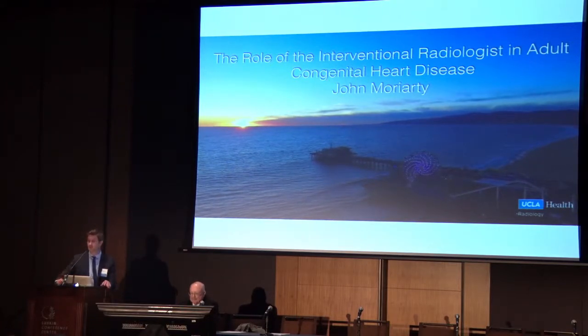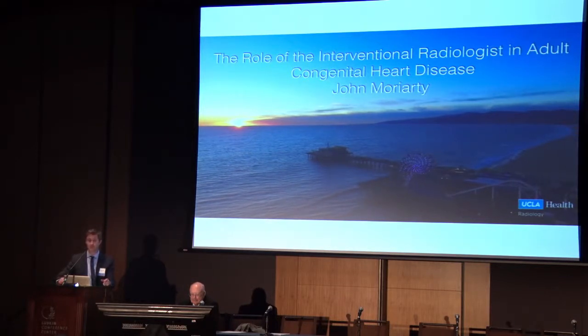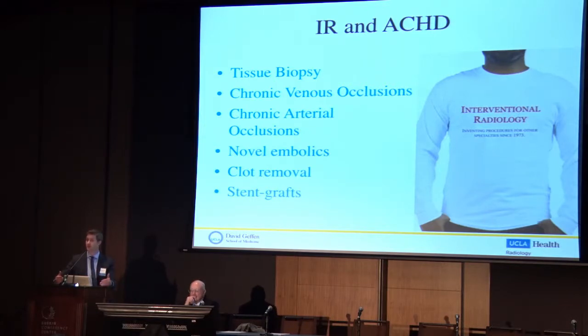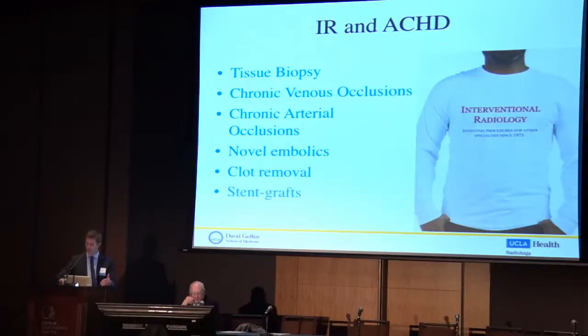Over the next few minutes I want to talk about some tips and tricks, some tools of the trade that we use in daily practice that I think can be appropriate for patients across many fields, but particularly in adult congenital heart disease. I was going to talk about tissue biopsy, but Rob Venick spoke well about it earlier. I'm going to cover chronic venous and arterial occlusions — because your patients are going to have multiple catheterizations throughout their childhood progressing to adulthood — novel embolics, clot removal, and stent grafts.